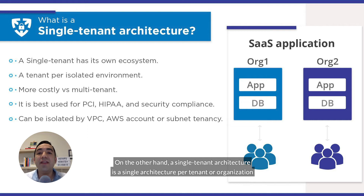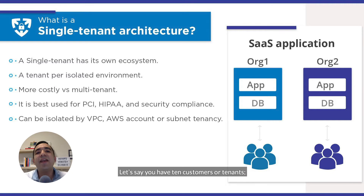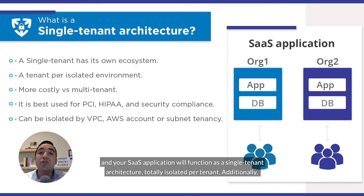On the other hand, a single-tenant architecture is a single architecture per tenant or organization, where the application has its own infrastructure, hardware, and software ecosystem. Let's say you have 10 customers or tenants — in this case, you will need to create 10 standalone environments, and your SaaS application will function as a single-tenant architecture totally isolated per tenant.